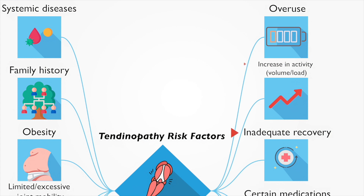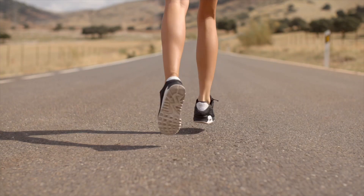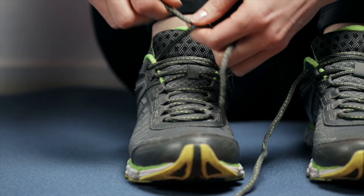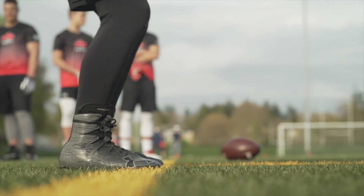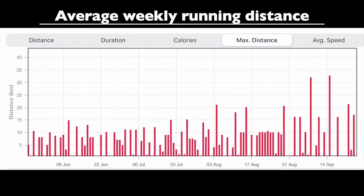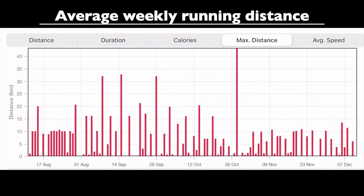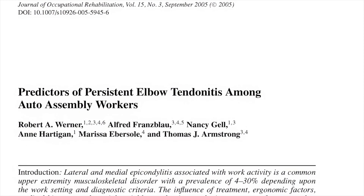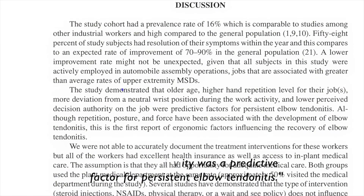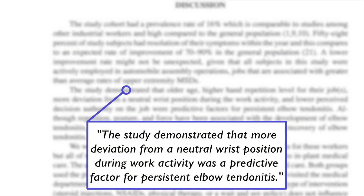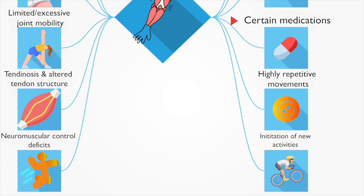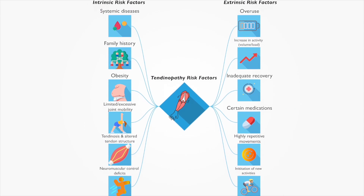Extrinsic risk factors for overuse tendinopathy include training errors like a sudden increase in tendon loading activity or inadequate rest, poor environmental conditions like running on cambered road surfaces or performing gymnastics on hard gym floors, and inadequate equipment like old or inappropriate footwear, or premature return to sport after injury. Of these, sudden substantial increases in training load — for example, doubling cumulative running distance from one week to the next — incur the greatest risk. Sub-optimal ergonomics also play a role in many upper extremity tendinopathies, and certain medications increase the risk of acute and chronic tendinopathy.